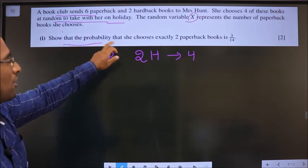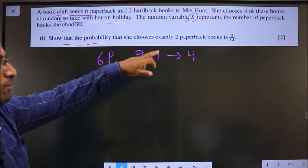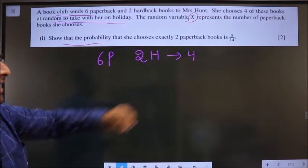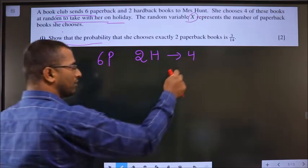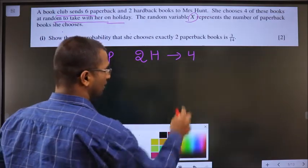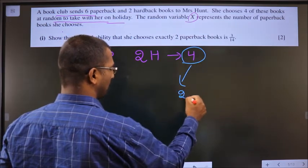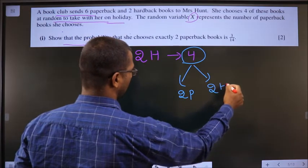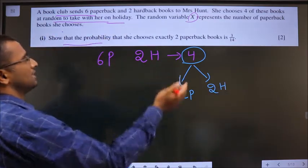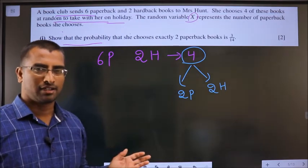Show that the probability that she chooses exactly 2 paperback books is 3 by 14. Out of her 4 selections of books, 2 has to be paperback. That means the other 2 has to be the other one which is hardback books. Clear with the question?